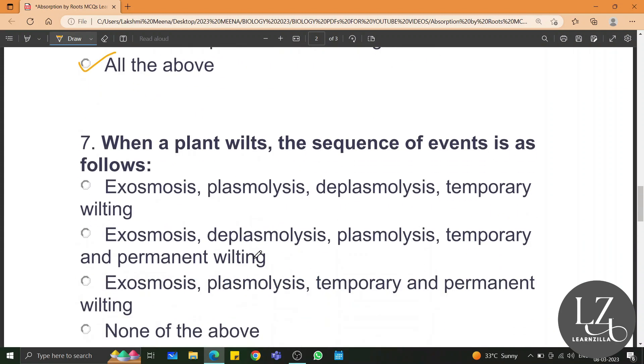When a plant wilts, the sequence of events is as follows: exosmosis, plasmolysis, temporary and permanent welding. This is the correct sequence.